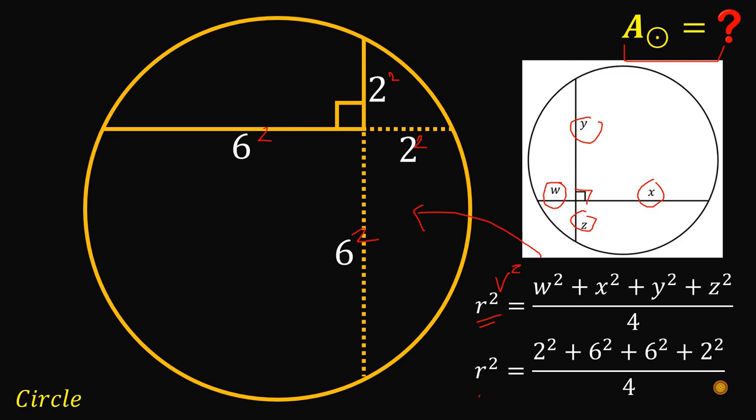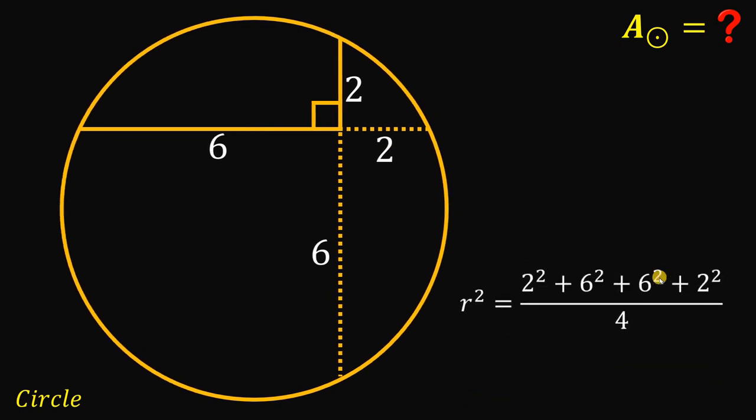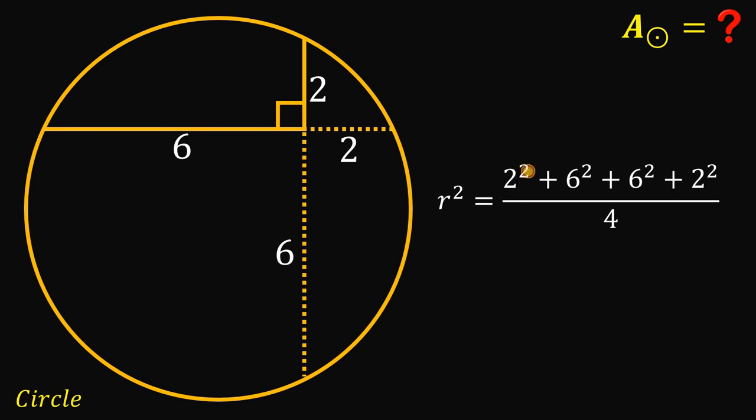And, we can now focus on this equation to solve for the value of r squared. Now, 2 squared is just 4, and 6 squared must be equal to 36. Now, 4 plus 36, this is 40, 40, plus another 40, this will give us 80 on the numerator, and 80 divided by 4, this will give us 20. Therefore, the value of r squared is simply equal to 20.